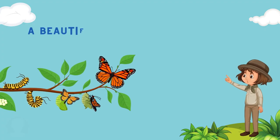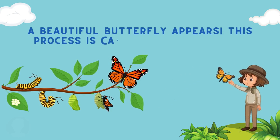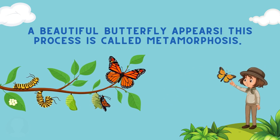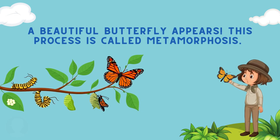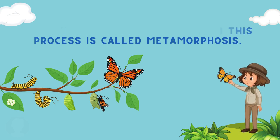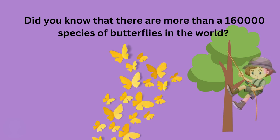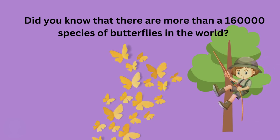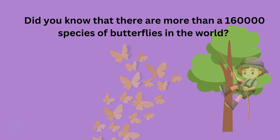What comes out? A beautiful butterfly! This entire process, where the eggs hatch into caterpillars and the caterpillars turn into butterflies, is called metamorphosis. Did you all know that there are more than 160,000 species of butterflies in the world?